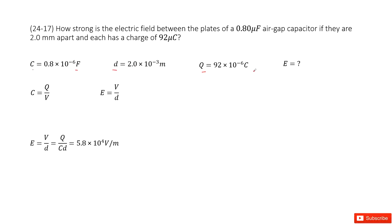Next, we need to find the electric field between these two planes. We know the electric field equals the potential over the distance. Distance is given, so we need to find V.